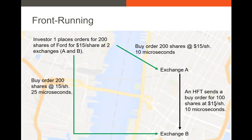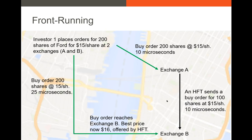That co-located high frequency trader sees the order at Exchange A and sends their own order directly to Exchange B to buy 100 shares at $15 a share. This order also takes about 10 microseconds, so in just over 20 microseconds total, the high frequency trader submits a buy order to Exchange B before Investor One's order arrives. The high frequency trader buys those shares at $15, and when Investor One's order arrives there are no more shares available at $15. Investor One must buy at $16, and the high frequency trader sells at $16, earning a $1 profit per share.